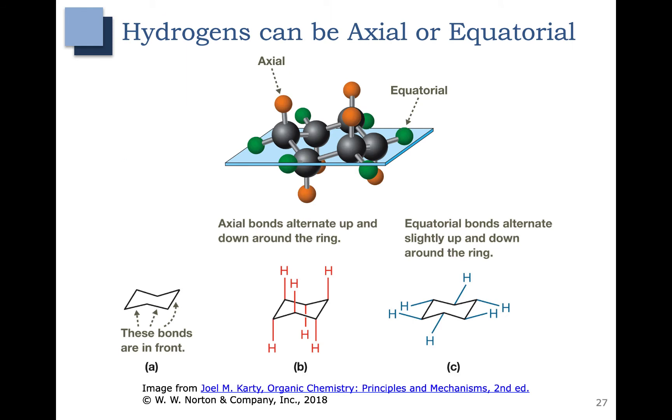Now that we know how to correctly draw a chair conformation, let's go over the types of hydrogens that we drew out. Here's a 3D picture of a chair conformation right here. The groups that are identified as axial here are in orange, and they are pointed either straight up or straight down.